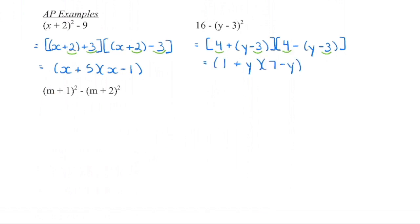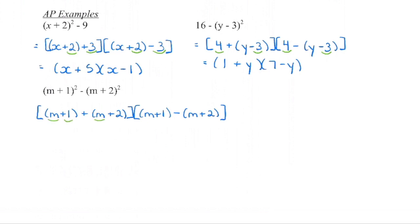In the last AP example, we have a squared term minus a squared term, so we set up our conjugates. Square root the first term to get m plus 1, square root the last term to get m plus 2. Looking for like terms: m plus m is 2m, and 1 plus 2 is 3 in the first bracket. In the second bracket, m minus m cancels, and distributing the negative sign gives negative 1. So the final answer is negative 1 times 2m plus 3.